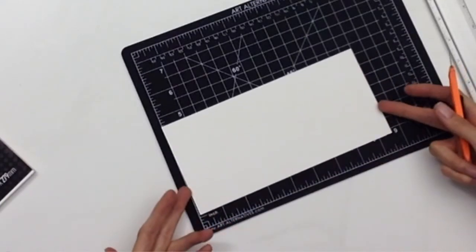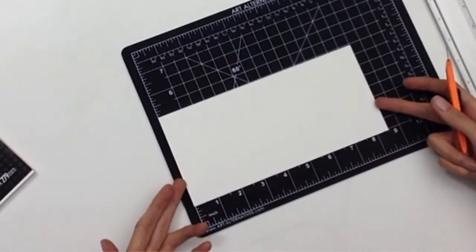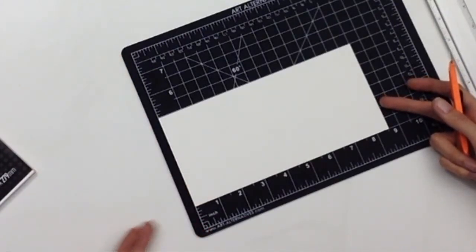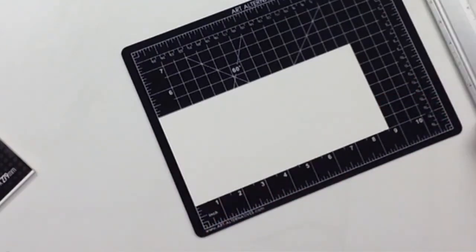Now I'll slide the paper back to the zero and up to reveal the numbers. Lining the paper up on both the vertical and horizontal alignment edges.